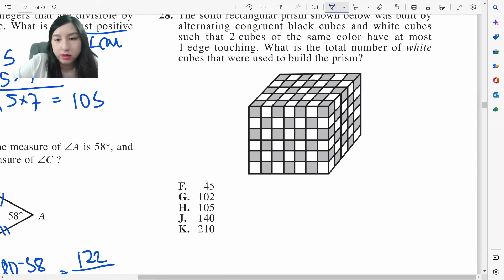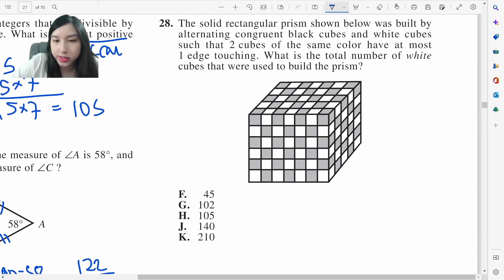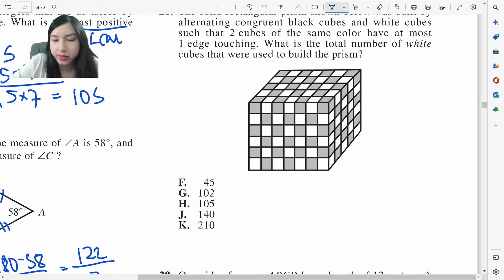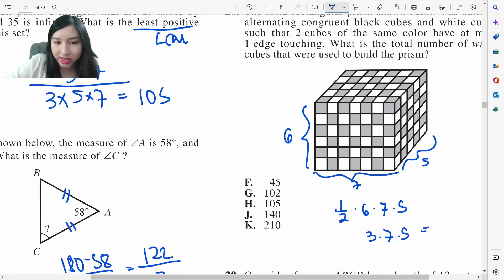Total number of white cubes to build the prism. Obviously, if you find this answer, half of them are going to be white. This is 7. This is 3, 4, 5, 5. This is 6. So half times 6 times 7 times 5 is 3 times 7 times 5 which is 105 as well.